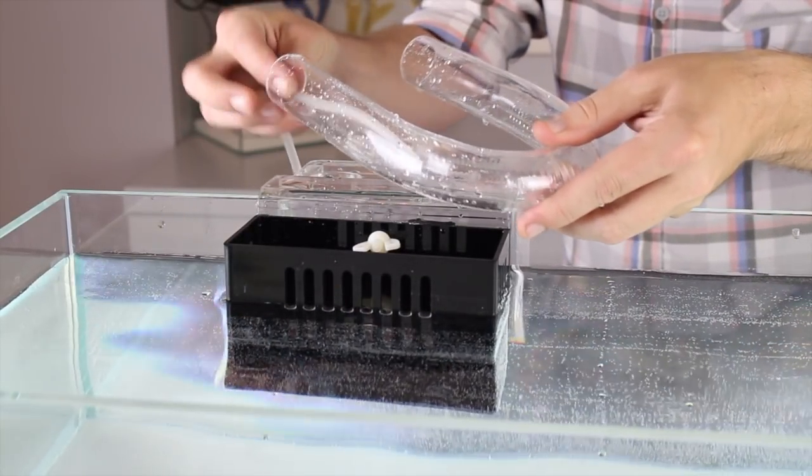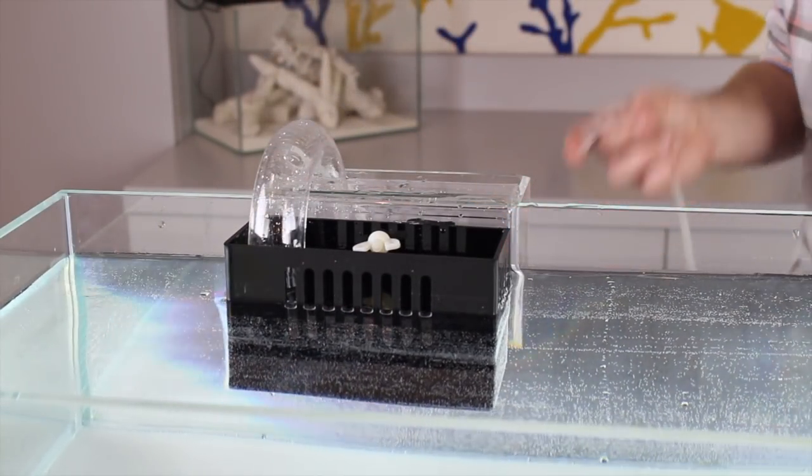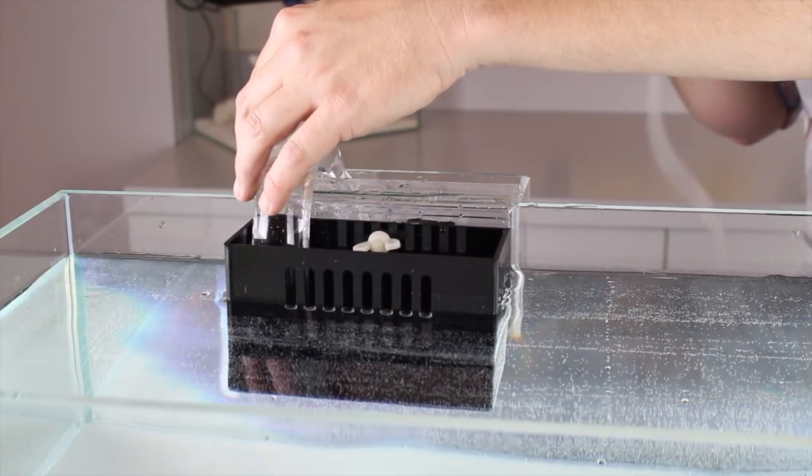The OF series boxes are easy to start up and priming only takes a few seconds. Just use an airline to suck out any air caught in the U-tube and the overflow is ready to go.